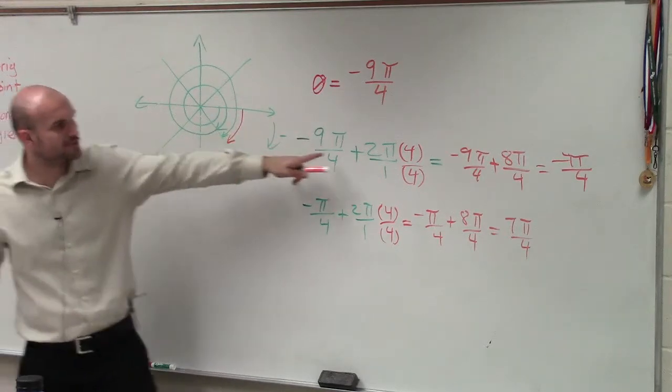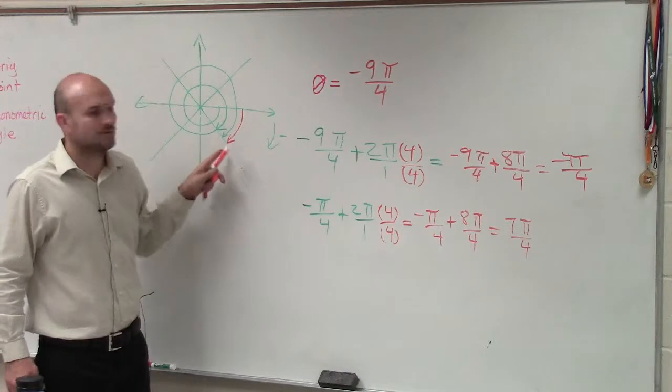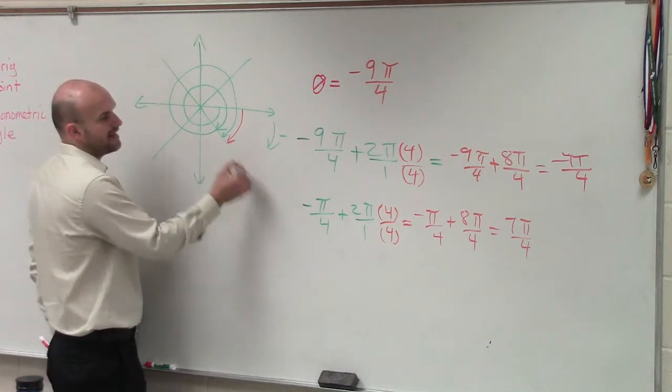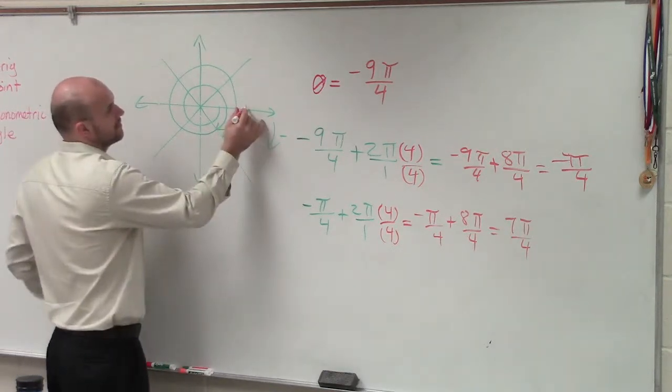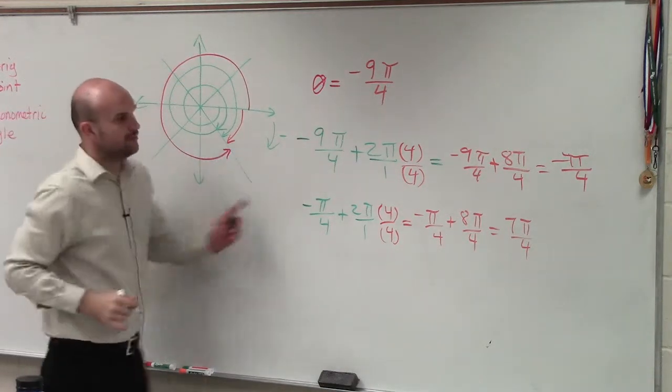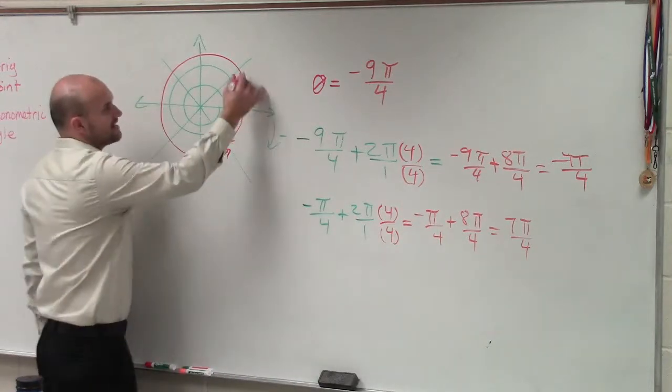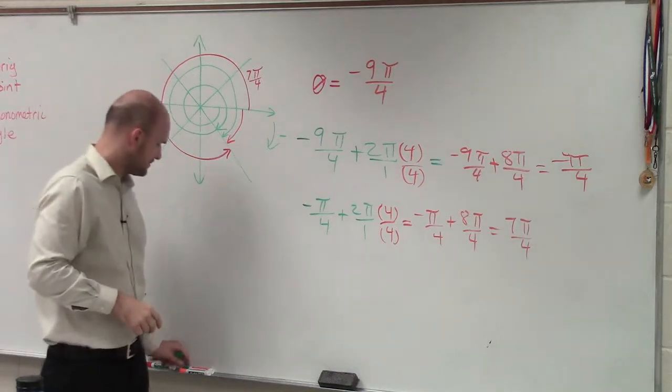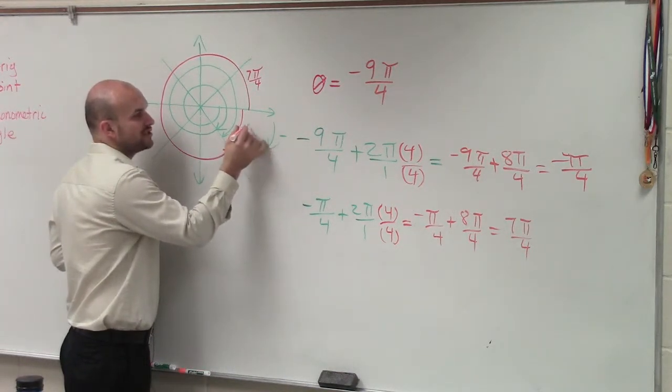So I just say, oh, just add 2π to that angle. And it just gives me negative π over 4, which is right there. And then if I take that again, if I take negative π over 4 and I add 2π again, that now gives me this angle, which is 7π over 4. So this angle is 7π over 4. That's the smallest positive. And this is the smallest in measure negative.